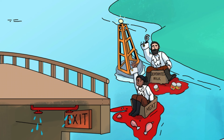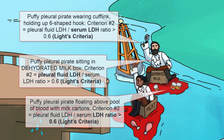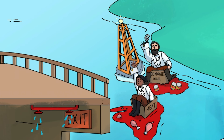The second of LIGHTS criteria works similarly. If the pleural fluid lactate dehydrogenase to serum LDH ratio is greater than 0.6, then you're dealing with an exudate. That's why this puffy pleural pirate is sitting in a dehydrated milk box floating above a pool of blood with cartons of dehydrated milk in it, holding up his curiously shaped hook for help — see how the cufflink makes it look like a 0.6? Conceptually, lots of LDH in the pleural fluid indicates the presence of inflammation, since cells like neutrophils and lymphocytes migrate into the pleural space in the presence of inflammation and increased capillary permeability.